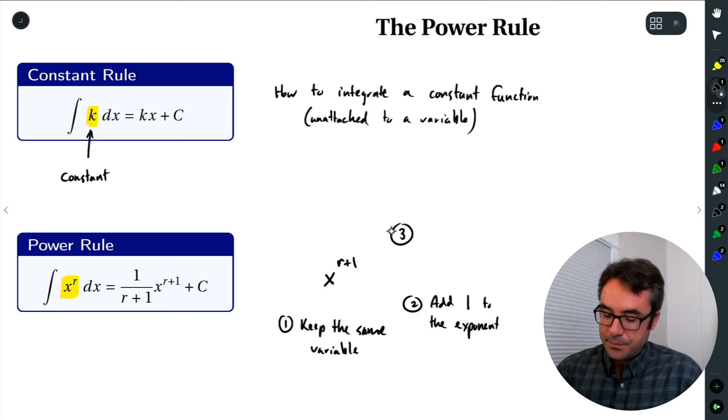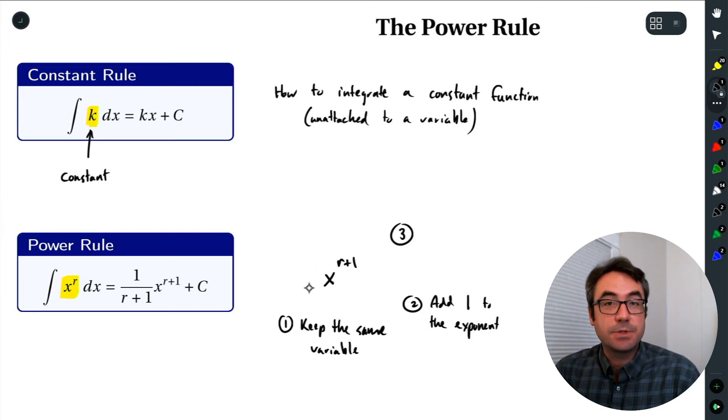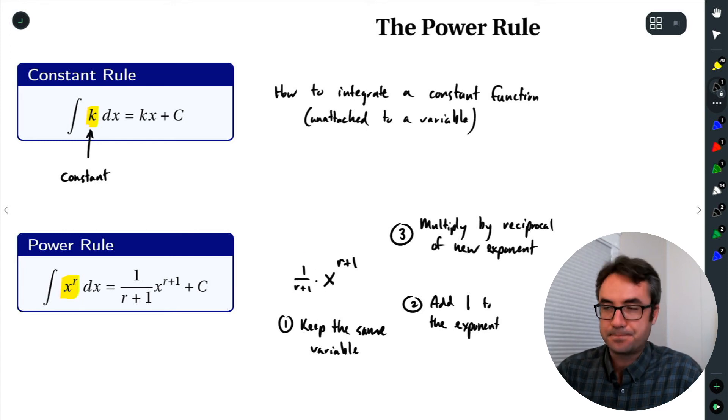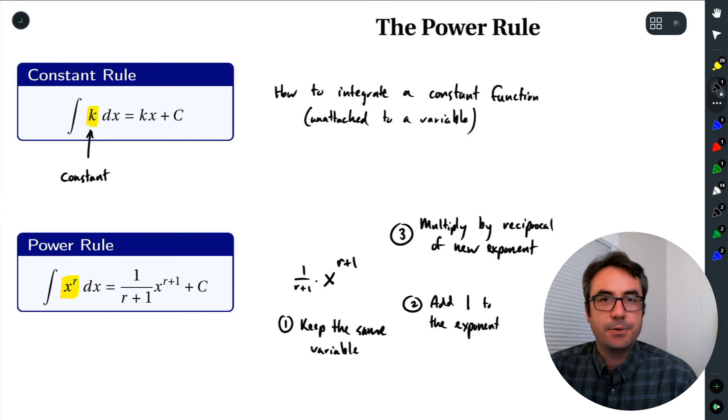the third step is we multiply by its reciprocal. So of this new exponent, we're going to multiply by its reciprocal. So the reciprocal is just 1 over r plus 1. So we're going to multiply by that reciprocal. Put it in front. And that's how we do the power rule.